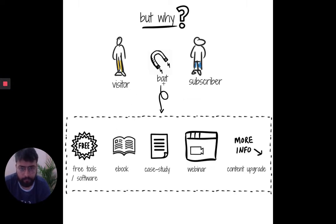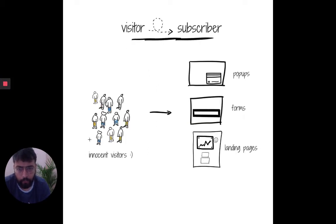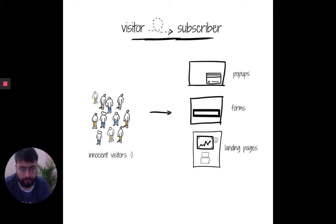For a visitor to trust you and become a subscriber — give their email ID — you may be giving them some free tools or software, a free trial period, a free e-book, a case study, a webinar, or a content upgrade. In return, your visitor may give their email address to convert into a subscriber. To do so, you may be using tools like pop-ups, forms, or landing pages.